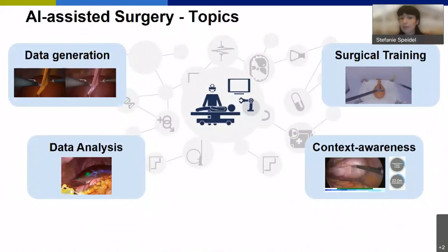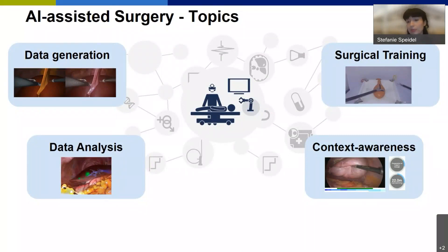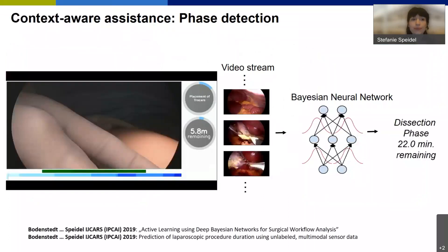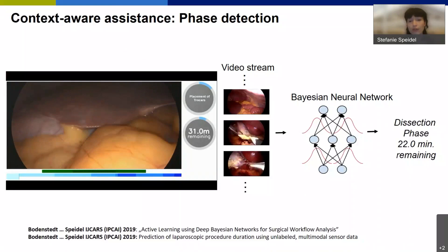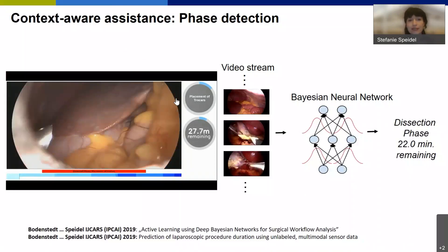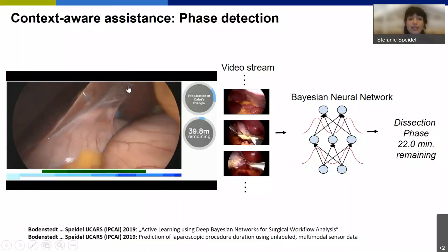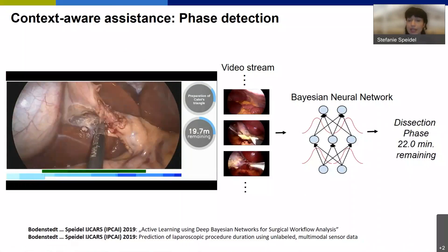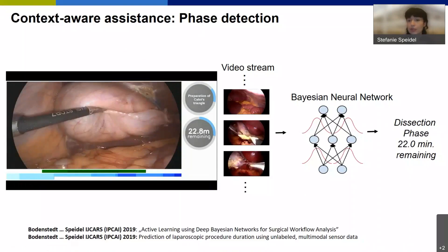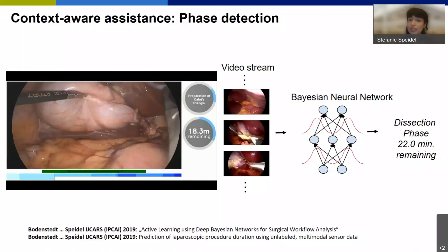The next example is in the context of context awareness — providing the right information at the right time. A computer or robot needs to know which surgical phase we are in and what information is needed at that phase. One example is estimating the remaining time of surgery for workflow management: the system detects the current surgical phase and estimates the remaining time. We use annotated videos with phase labels and a Bayesian neural network that also incorporates uncertainty in our remaining-time prediction.